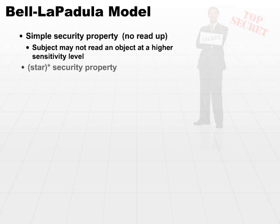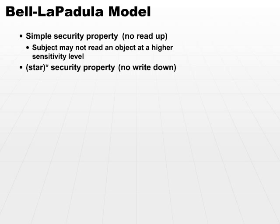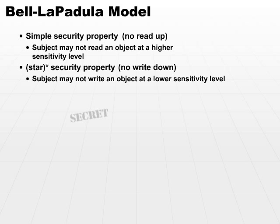The next property, the star security property, is called the no-write-down property. This one may take a little thought. The subject may not write an object at a lower sensitivity level. You may think: what difference does that make? If I am cleared at a secret level, shouldn't I be able to write something at a lower clearance?